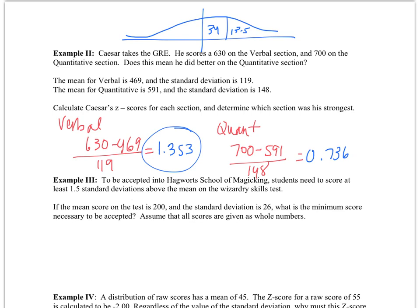This is where z-scores are very helpful. They help us compare things when they're not really comparable otherwise.